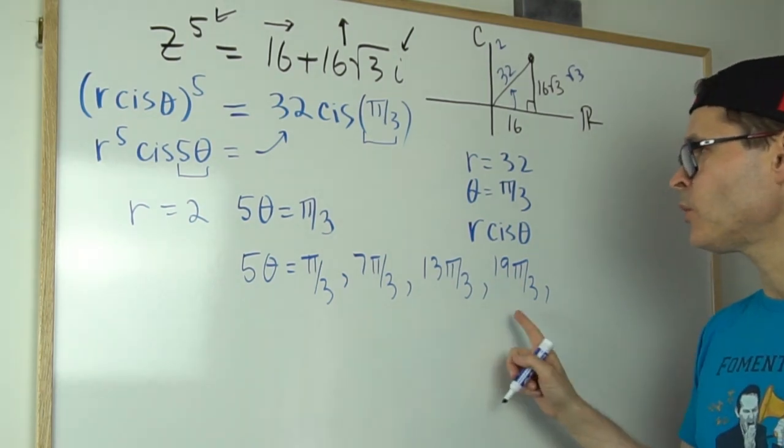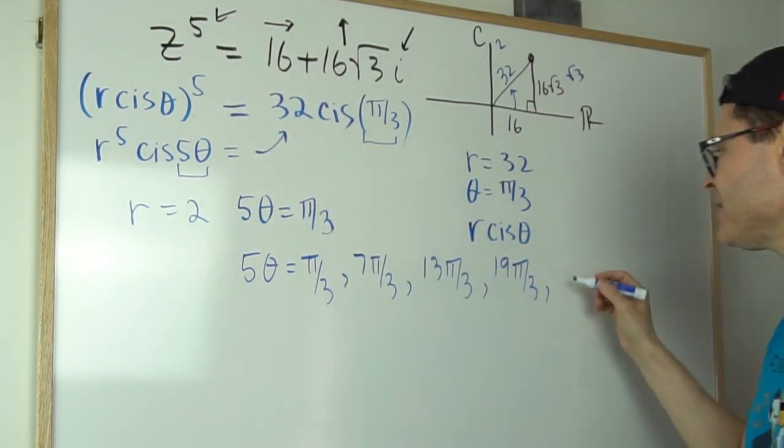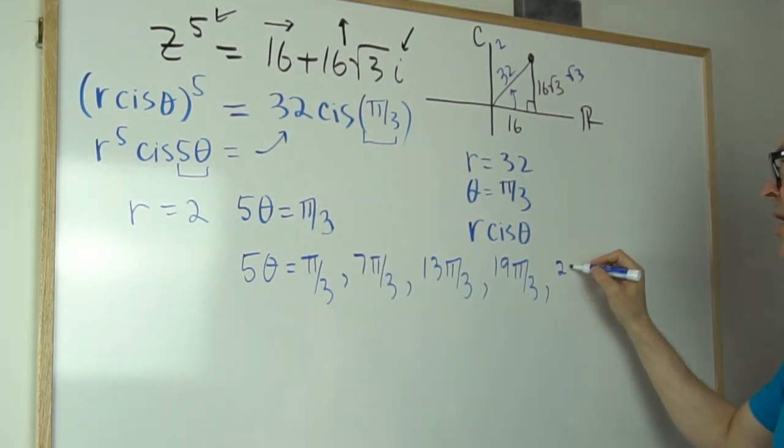And I'm counting one, two, three, four. Oh, I need five. So you just add it again. So I get 25π over 3.